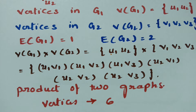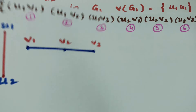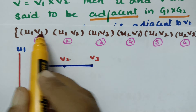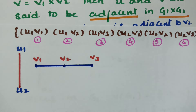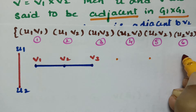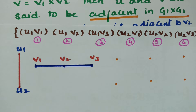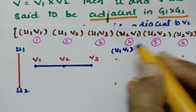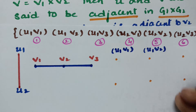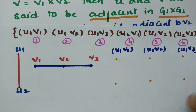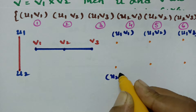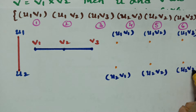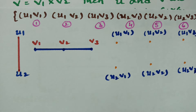So the product graph has 6 vertices total. We now plot all six points. The first row contains (U1,V1), (U1,V2), (U1,V3), and the second row contains (U2,V1), (U2,V2), (U2,V3). These are all the six points we need to work with to construct the product graph.